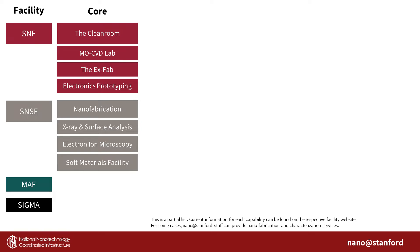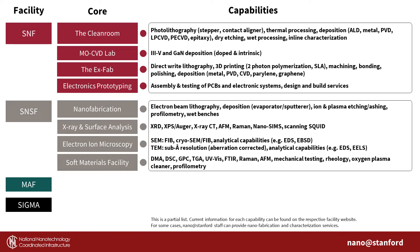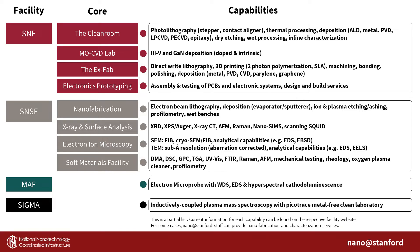Rearranging the chart, let's look at each facility's instruments. SNF is geared towards silicon semiconductor processing with the cleanroom, with expanding tool sets through the XFAB, MOCVD lab, and electronic shop. SNSF accommodates a larger scope of material processing and has specialized characterization techniques such as X-ray and electron microscopy. The majority of researchers use both facilities. MAF specializes in electron microprobe and SGMA specializes in inductively coupled mass spectroscopy.